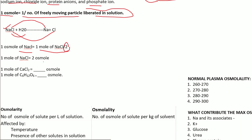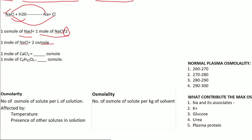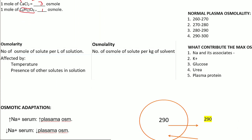So 1 mole of sodium chloride equals 2 osmol. Similarly, 1 mole of CaCl₂ contains 3 osmol — one calcium ion and two chloride ions. And 1 mole of C₆H₁₂O₆ (glucose) contains 1 osmol, since glucose does not dissociate.